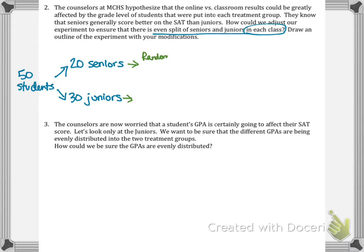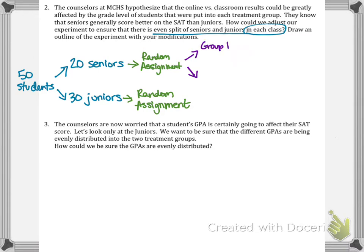Now we do our random assignment, which has to be included. I will have group 1A with 10 seniors and group 2A with 10 seniors. I'm calling them 1A and 2A because down below I'll have group 1B with 15 juniors and group 2B with 15 juniors.